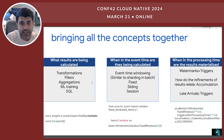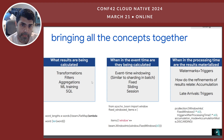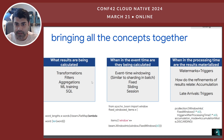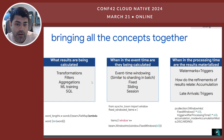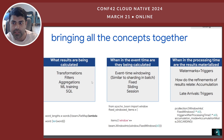Bringing all these concepts together from a different angle: first, what results are being calculated? You can define them with transformations, filtering, aggregation, SQL queries, or machine learning training. Second, when in event time are they being calculated? This is where windowing comes in — event time windowing is similar to sharding in batch. There are fixed windows, sliding windows, and session windows. For example, in Apache Beam, an open-source framework, you can define a fixed window of 60 seconds in event time.